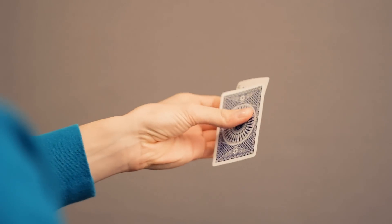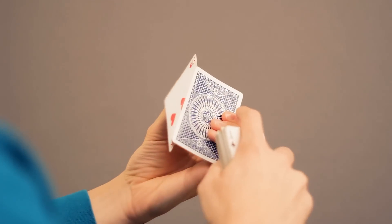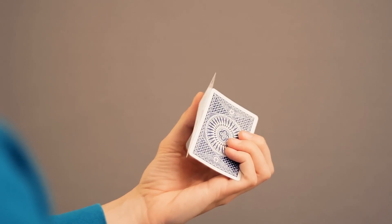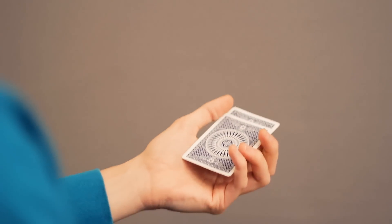And then you curl in these three fingers, and that'll make the two singles align in dealer's grip.